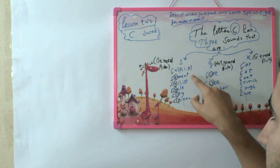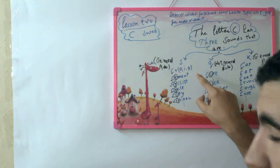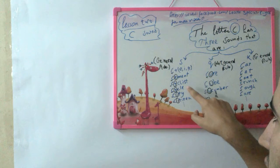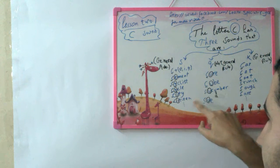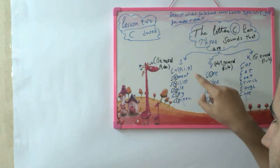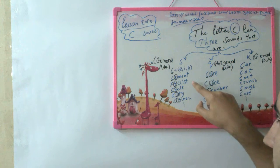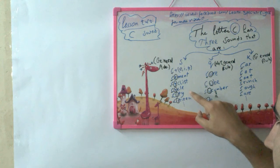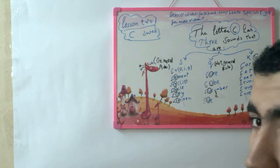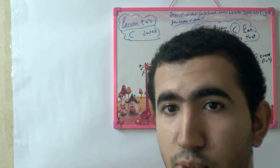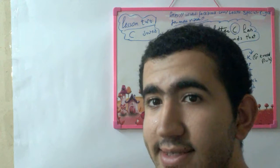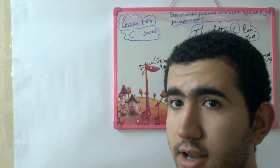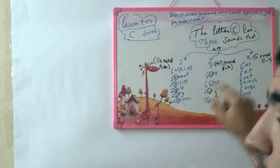Like cement, cyclist, cycle, city, and citizen. So C here is pronounced as S. The second pronunciation for the C letter is Q.